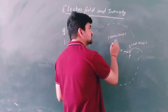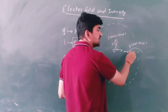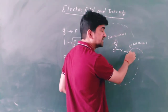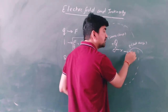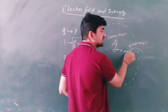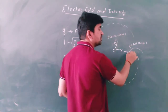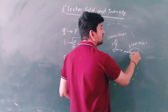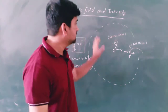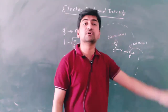If the source charge is positive and we place a positive test charge near it, then like charges repel, so the force will be directed away from the source charge — meaning the electric field direction will be outward from a positive source charge.